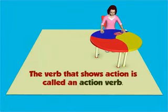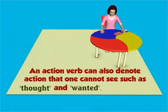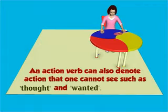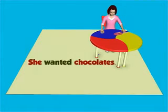The verb that shows action is called an action verb. An action verb can also denote action that one cannot see, such as thought and wanted. For example: 'She thought.' 'She wanted chocolates.'